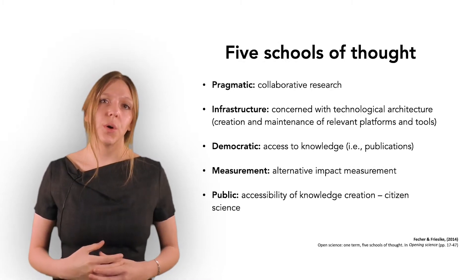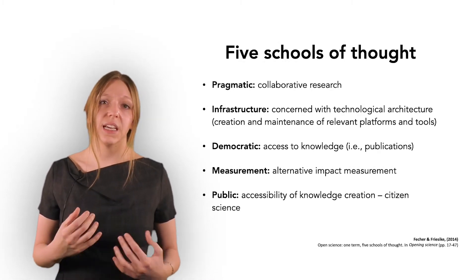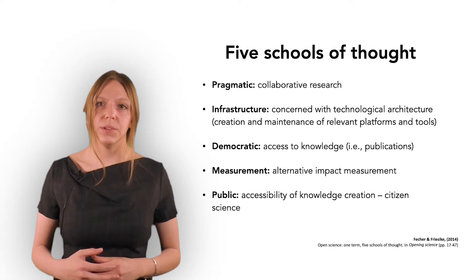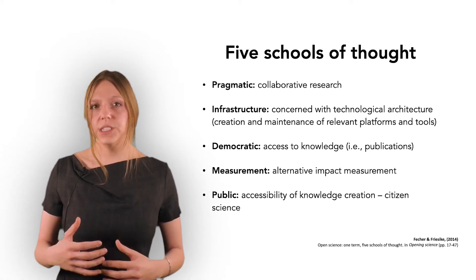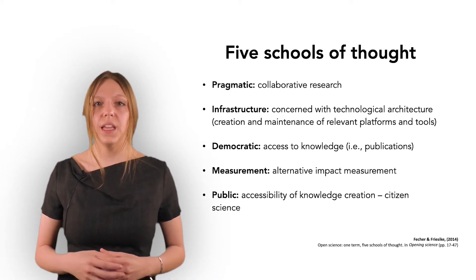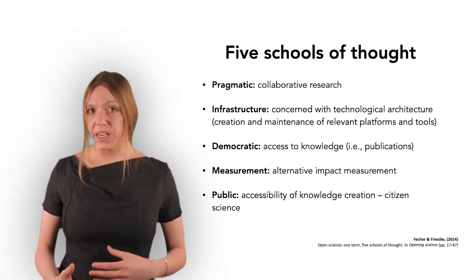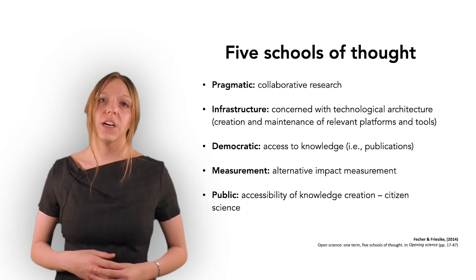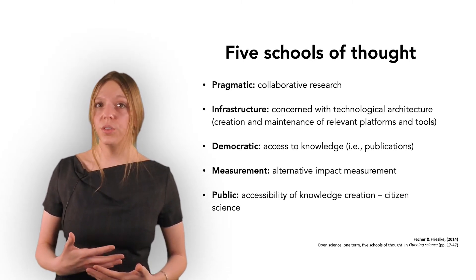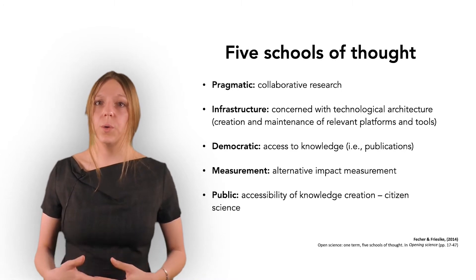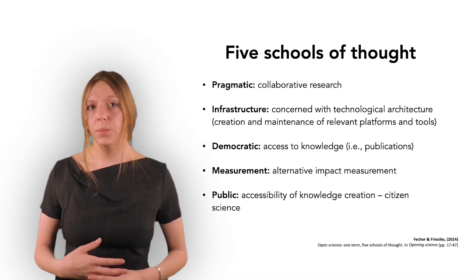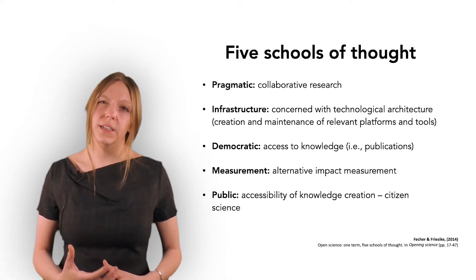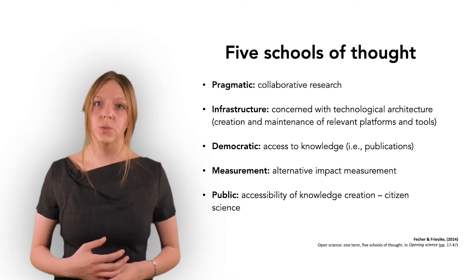Now, despite definitions of open science as one movement, there are a number of different aspects or focuses that can be found in open science. They have been presented as five different schools of thought. The pragmatic school focuses on collaborative research. The infrastructure school is most concerned with the technological architecture, which includes creating and maintaining a number of relevant platforms and tools. The democratic school focuses on the access to knowledge, meaning publications, and sees the current publication system — in which most articles are hidden behind a paywall — as one core obstacle to science being open.